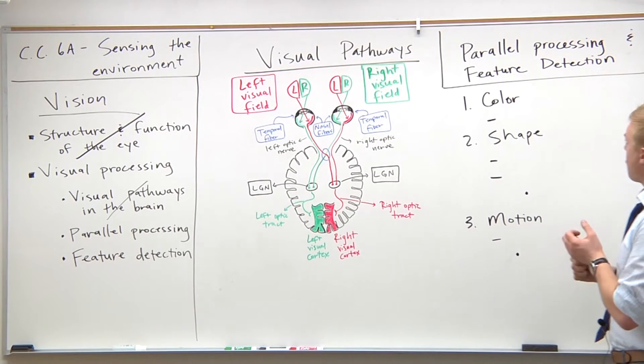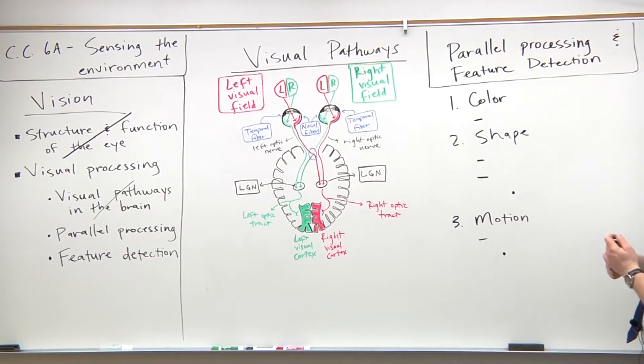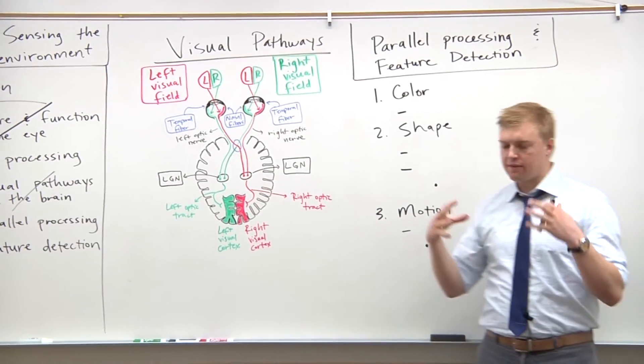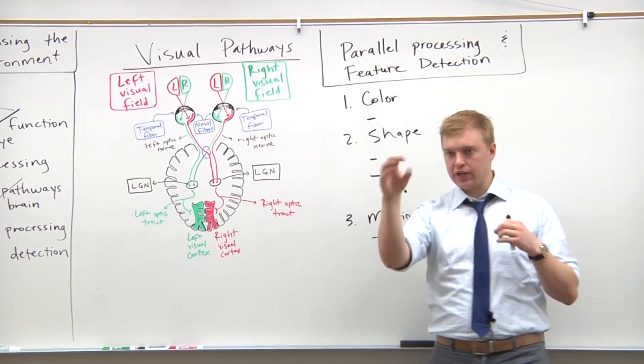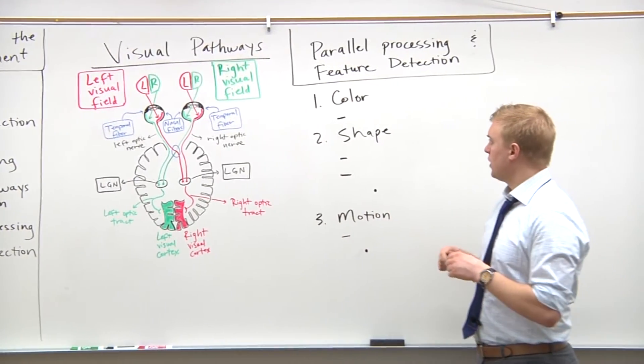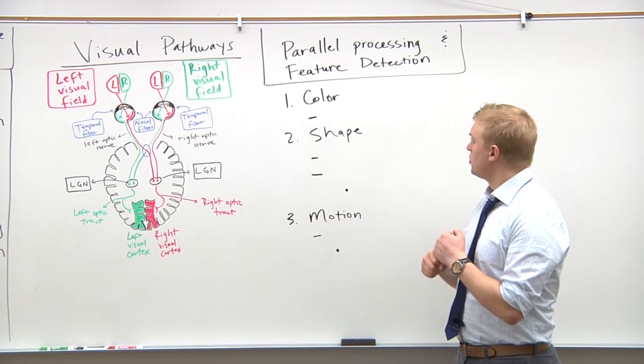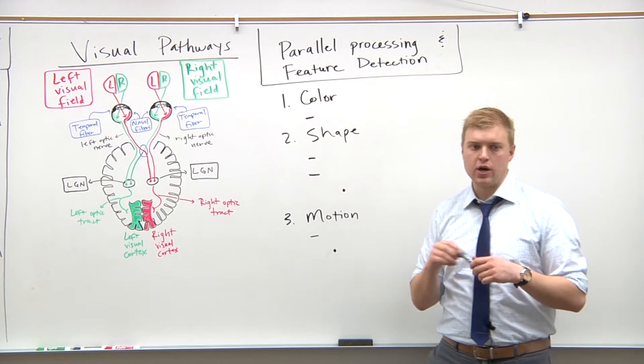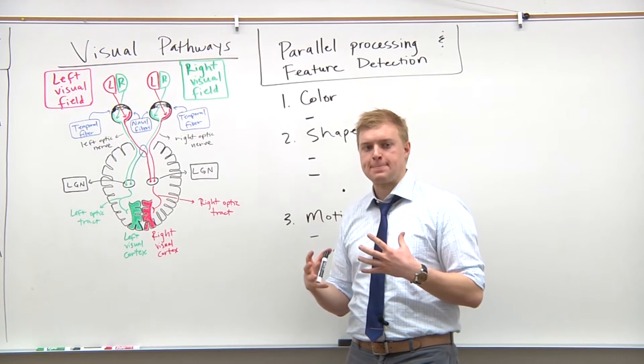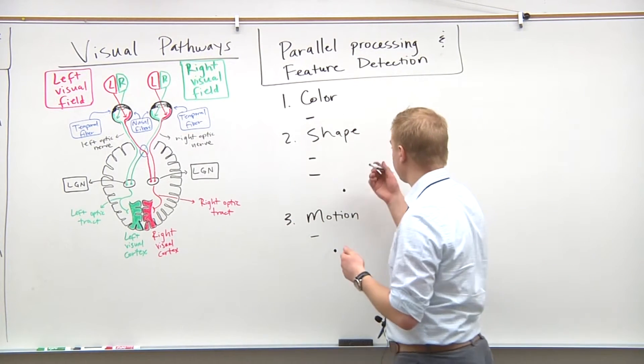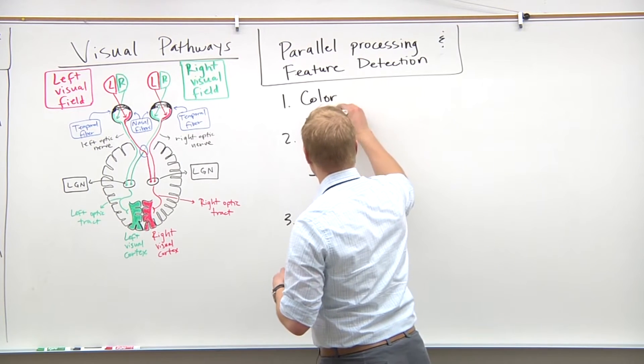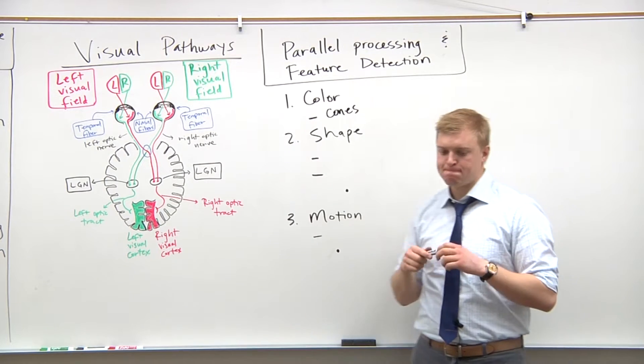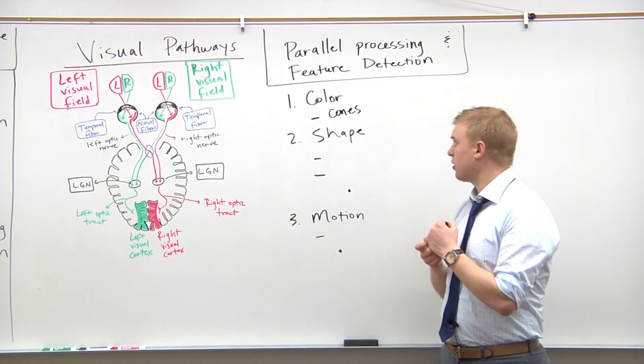So a couple of things here. There are three main characteristics that we're going to be analyzing when a photon of light or when we're looking at an object and analyzing it. And they are color, shape, and motion. So color, what allows us to see color? Good, the cones. And we won't go too into depth right now on that because we already talked about that previously. Yeah, cones are what allow us to see color.